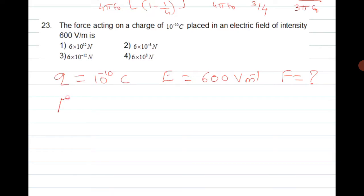Force equals field into charge. So the field is 600 and charge is 10 raise to minus 10. Finally we get 6 into 10 raise to minus 8. So 6 into 10 raise to minus 8 is the answer. The second option is correct.